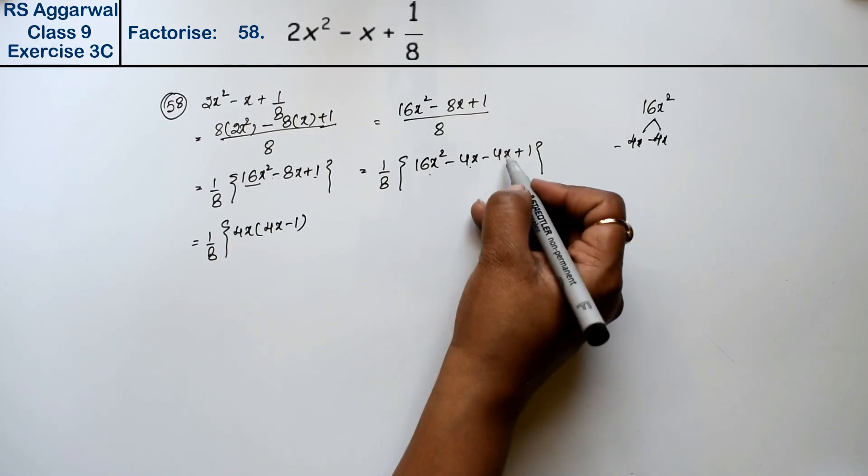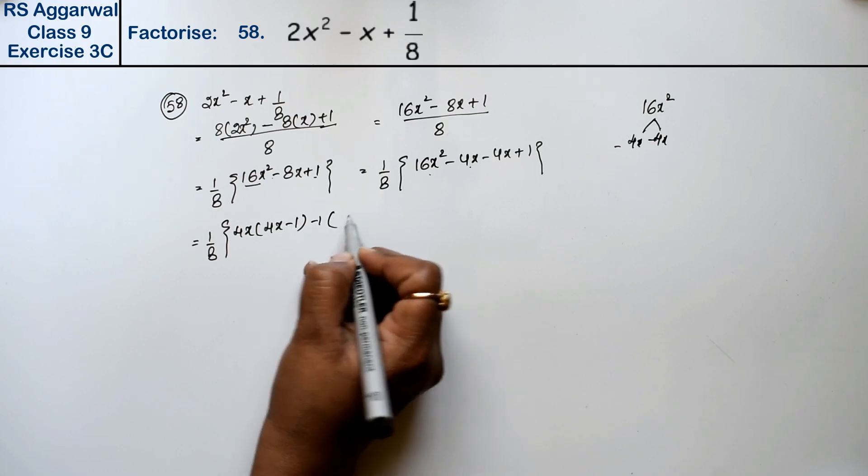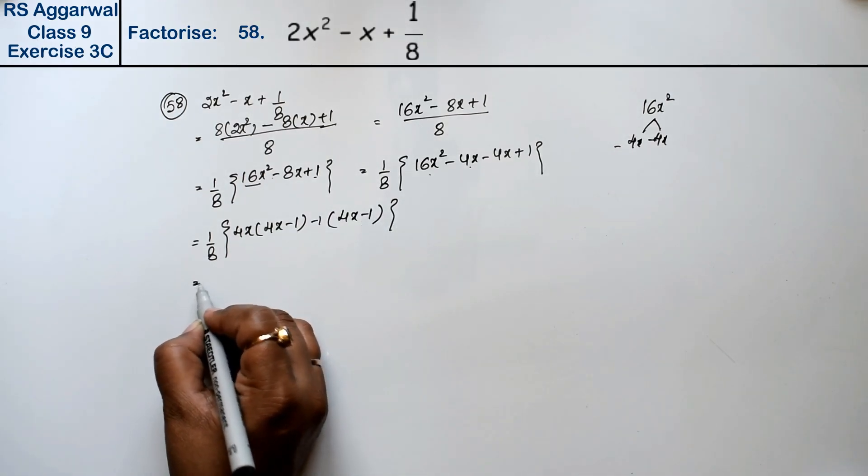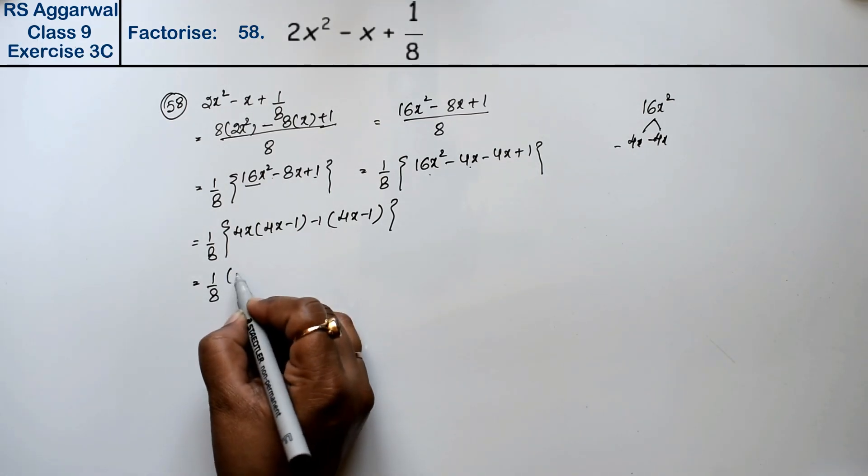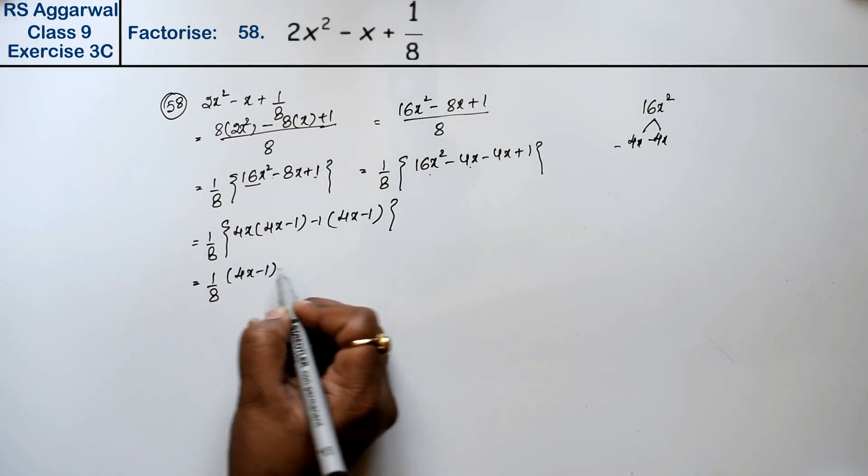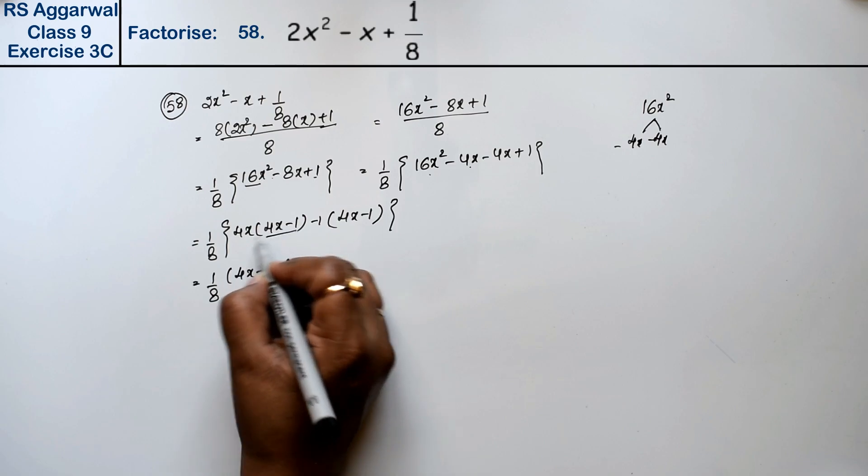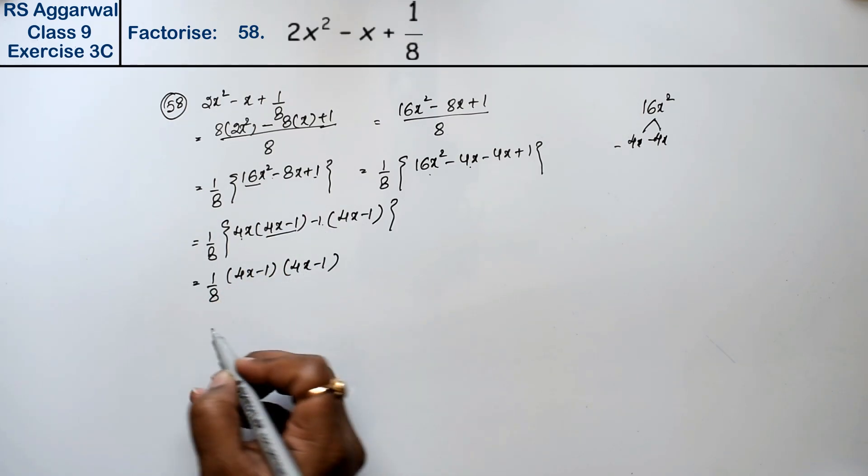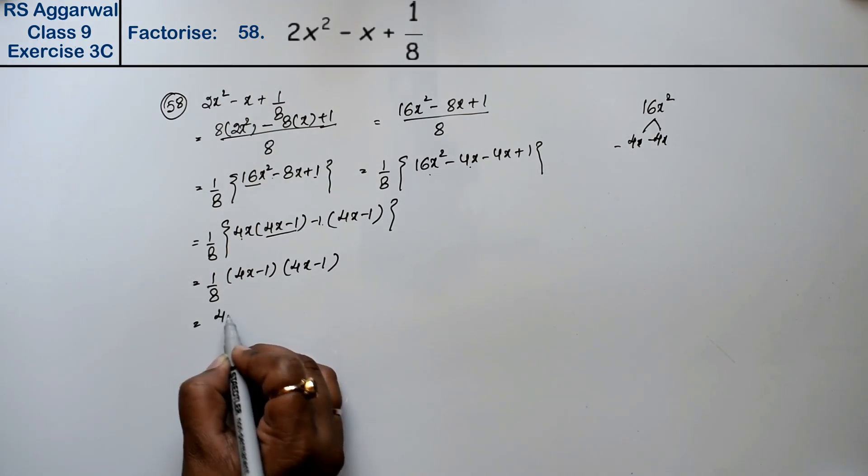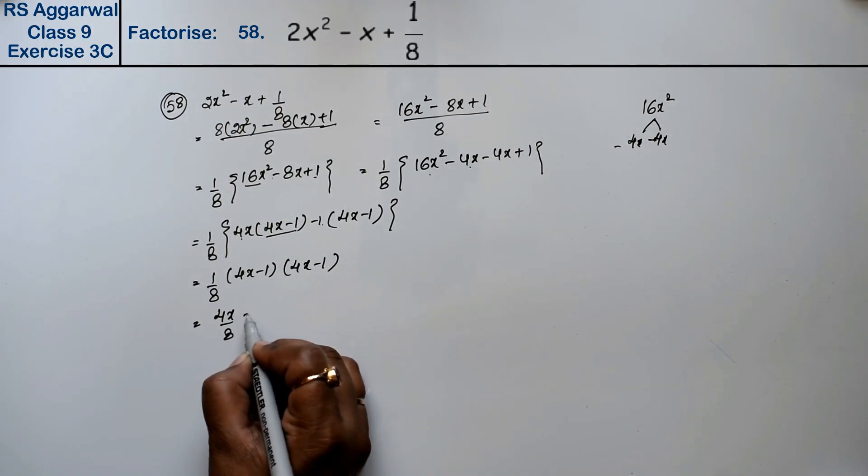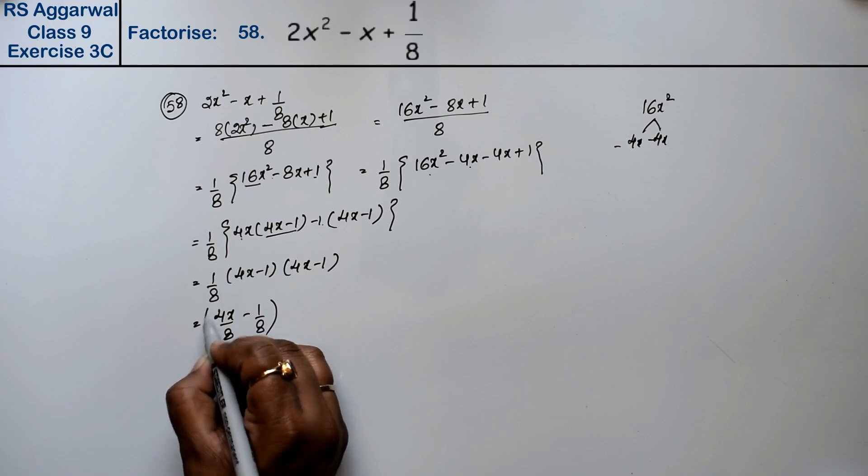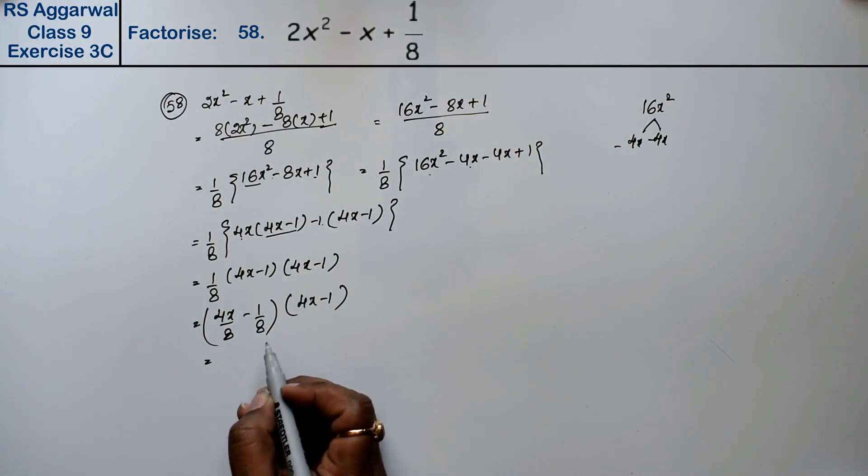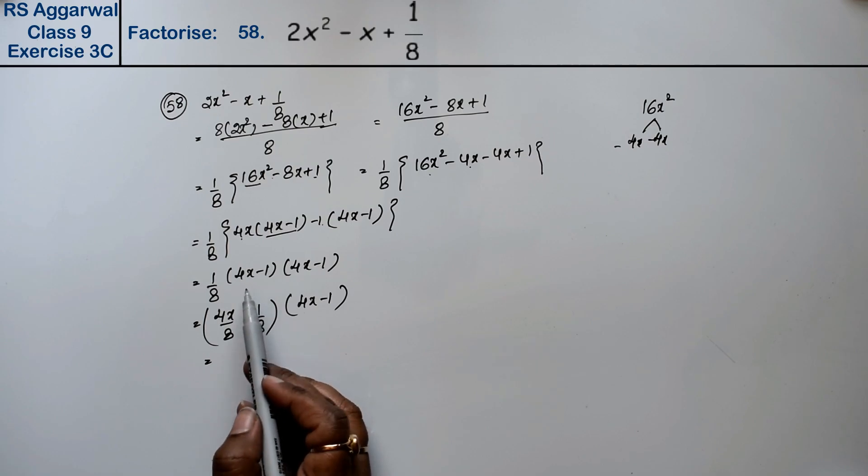Factoring out the common term (4x - 1), we get 1/8(4x - 1)(4x - 1).